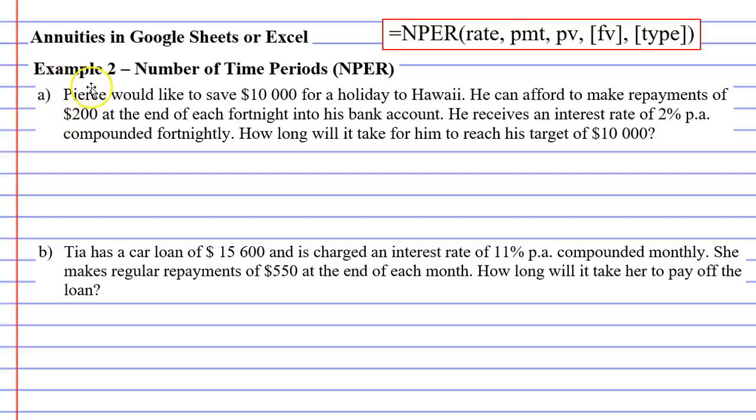In this video, we're going to complete example two, which is about finding the number of time periods using Google Sheets or Microsoft Excel. Question A says Pierce would like to save $10,000 for a holiday to Hawaii. He can afford to make repayments of $200 at the end of each fortnight into his bank account. He receives an interest rate of 2% per annum compounded fortnightly. How long will it take him to reach his target of $10,000?